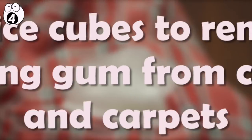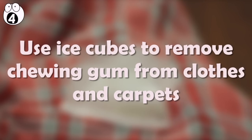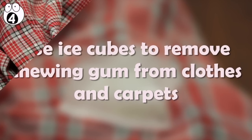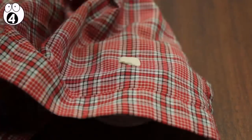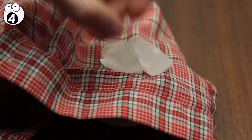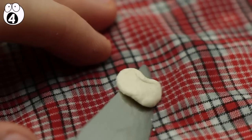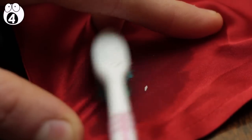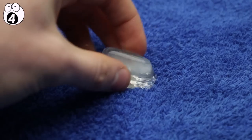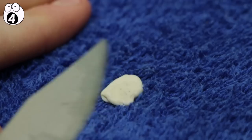Number 4. Use ice cubes to remove chewing gum from clothes and carpets. This is a great trick for helping unstick the unstickable. Place the relevant piece of clothing in a bag of ice, wait for the gum to freeze on it, then remove the clothing and chip the ice away with a knife. For more delicate material, it might be better to use an old toothbrush. If the gum is on a carpet, simply apply the ice directly to it and do the same thing.